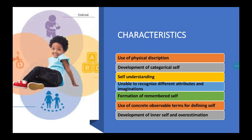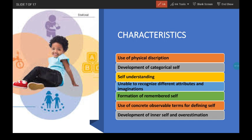What are the main characteristics of young children's understanding of themselves? First is use of physical description. During the initial stage of early childhood, children use physical descriptions of themselves or material possessions to differentiate themselves from others. They use descriptive terms such as big, small, etc. They use absolute terms for self-description and cannot make comparisons — for example, instead of saying 'I am taller than Rahul,' the child will simply say 'I am tall.'